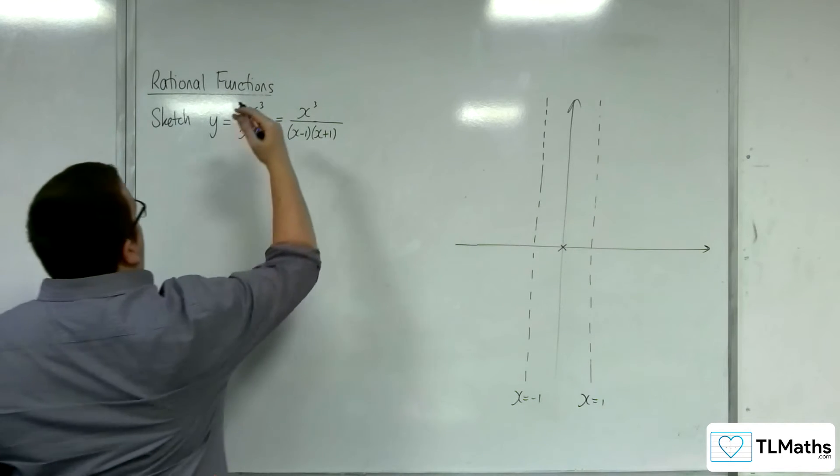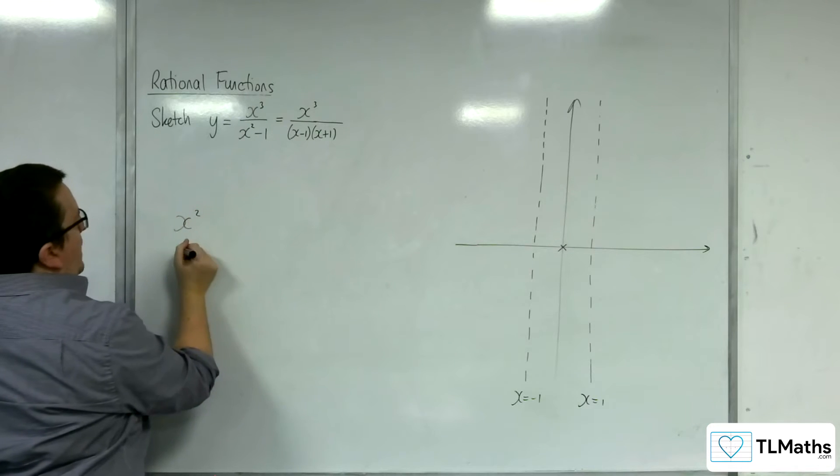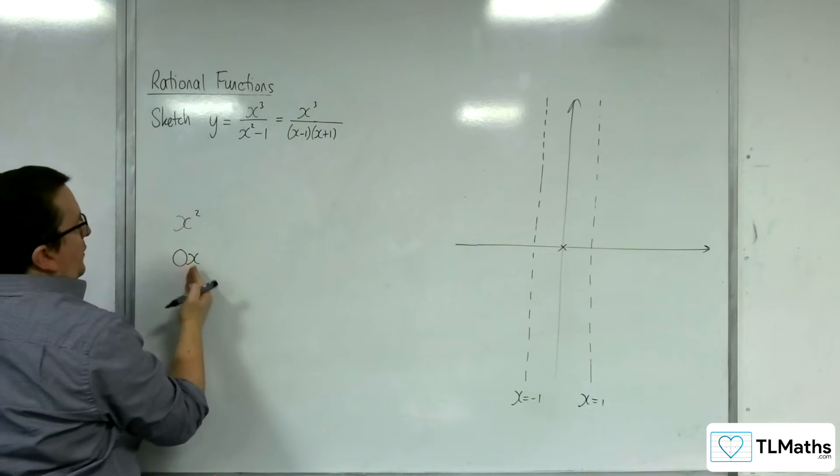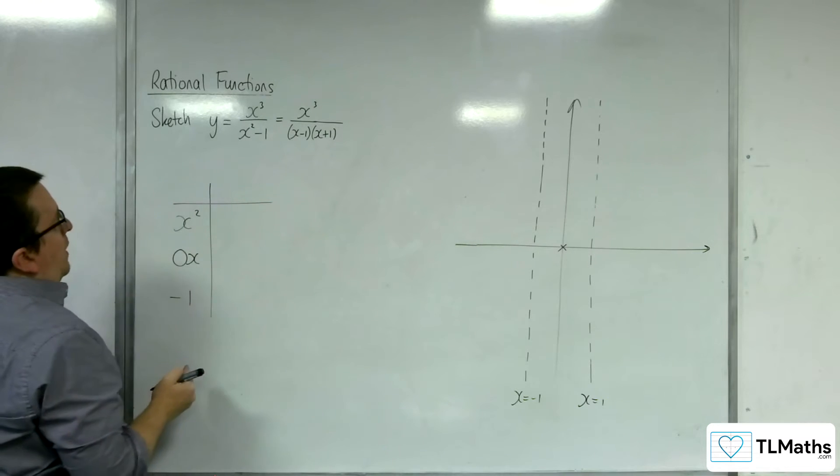Now I'm going to divide x³ by x² - 1. I'm going to write x² and then 0x as a placeholder, just to make sure everything matches up and lines up, and then the -1.